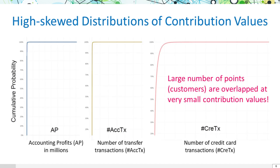We consider three types of contributions: accounting profits in millions, number of transfer transactions, and credit card transaction counts. The cumulative probability distributions for these are markedly skewed, with a significant overlap of customers at the lower end of contribution values.